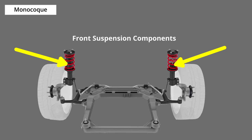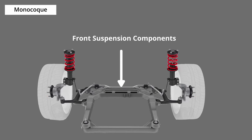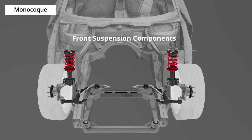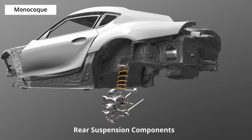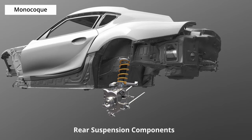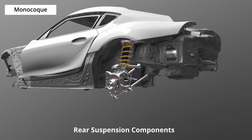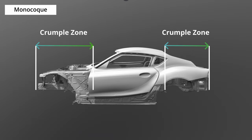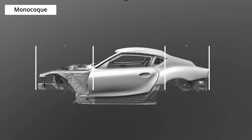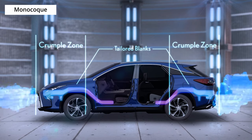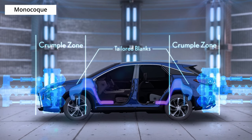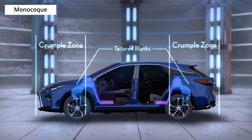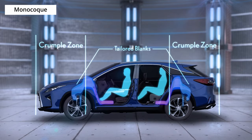Components like struts, control arms, and sway bars for the front suspension are attached to designated mounting points on the monocoque chassis. Similarly, rear suspension components are mounted to specific points on the monocoque chassis. Monocoque chassis often incorporate crumple zones at the front and rear of the vehicle. These zones are engineered to deform in a way that absorbs energy during a collision, helping to protect the occupants by reducing the abruptness of the deceleration.